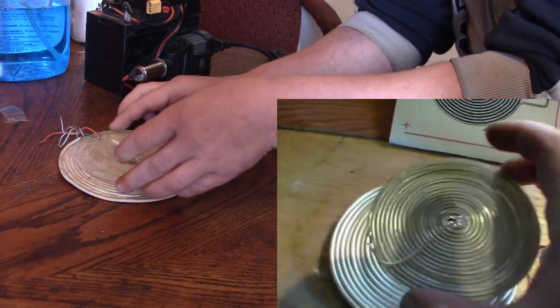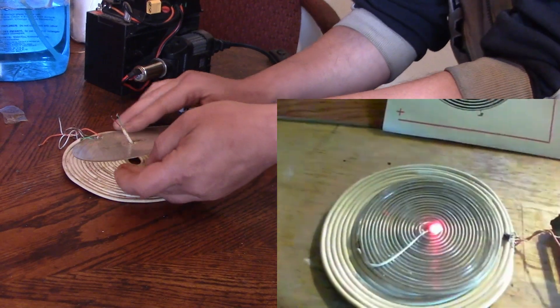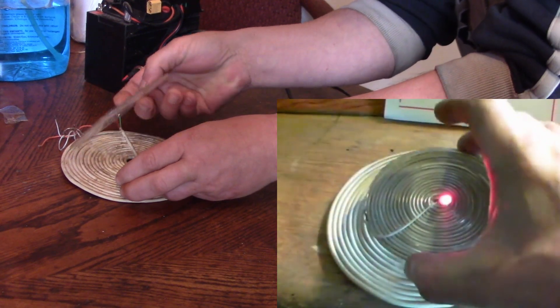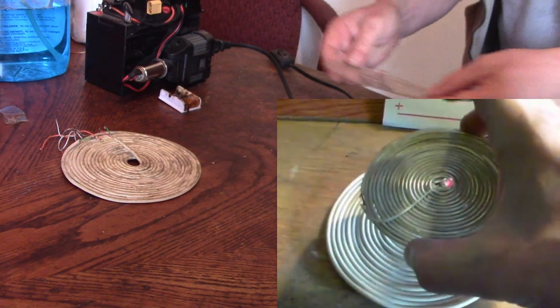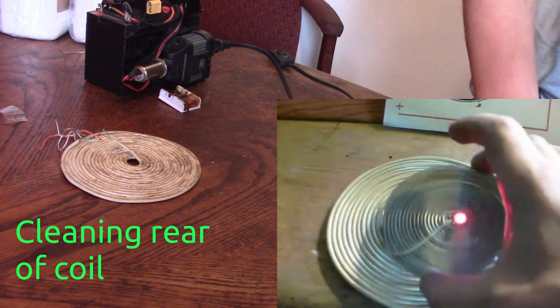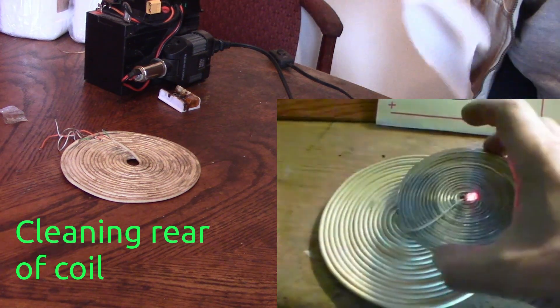And if we put another pancake coil on the top, there we are, wireless transfer. And the range here, about an inch or so of good lighting, and lights to a little bit of a range there. I can move it around on the top of there.